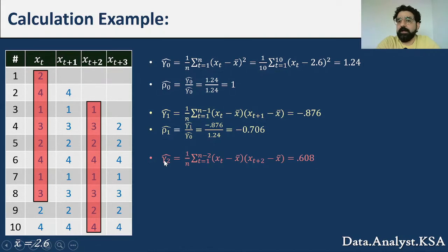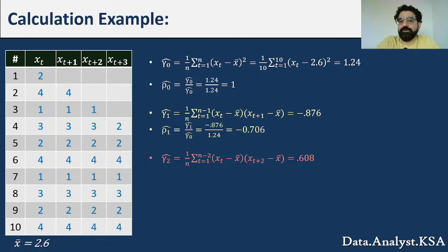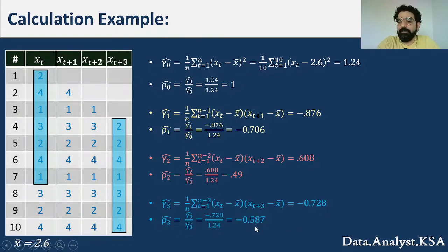For lag 2, we use the first eight values of X(t), summing from t=1 to n-2, giving gamma-hat(2) = 0.608. Dividing by 1.24 gives rho-hat(2) = 0.49. For lag 3, we use the first seven values, summing from t=1 to n-3, giving gamma-hat(3) = -0.728. Dividing by 1.24 gives rho-hat(3) = -0.587.